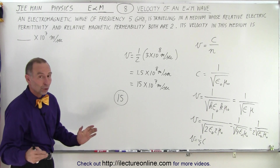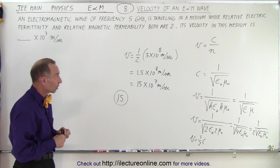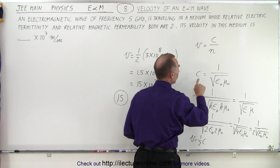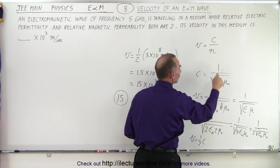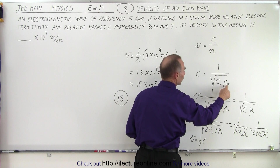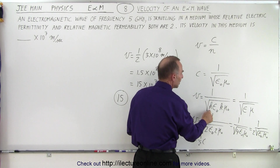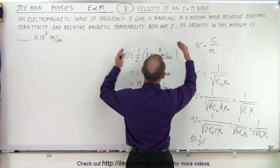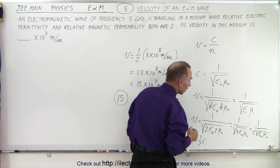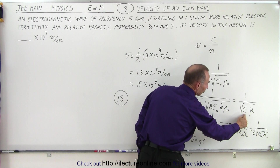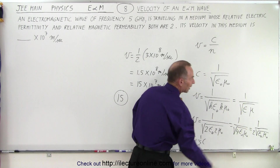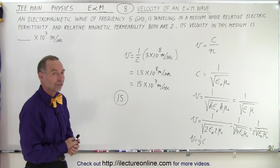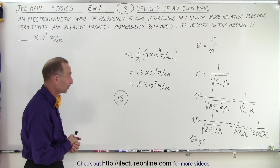If you know the principle for this problem — that the velocity equals the speed of light divided by the index of refraction, or equivalently that c equals 1 over the square root of ε₀μ₀, and for the velocity in the medium we multiply by the relative constants (in this case 2) — then the rest is just arithmetic, and the answer is 15. That is how we do that.